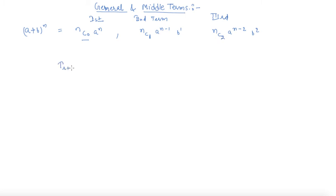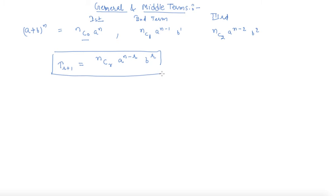Now I am writing the formula for the general term. Let us say it is the rth term. The formula is nCr · a raised to power n minus r · b raised to power r. So the formula for the r plus 1th term of binomial expansion is this general term formula, which you use whenever you are asked directly to find out, say, the fifth or sixth term.